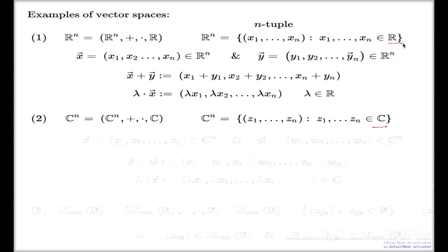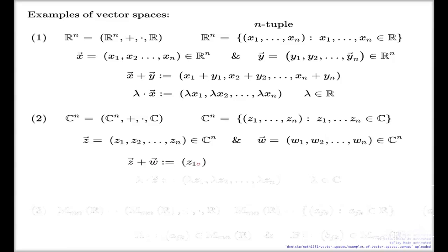Addition and multiplication are defined identically. If I have vector z with components z₁, z₂, ..., zₙ, and vector w with components w₁, w₂, ..., wₙ, when I add these, by definition I take the sum of the first components in the first place, sum of the second components in the second place, sum of the nth components in the nth place.